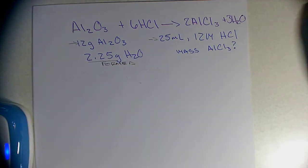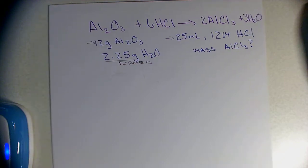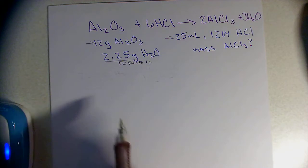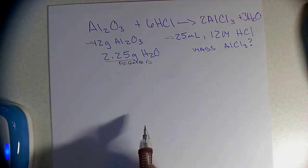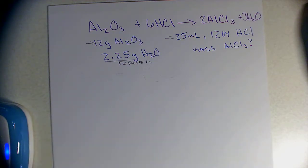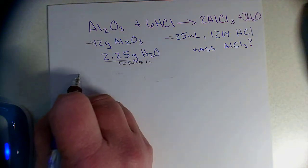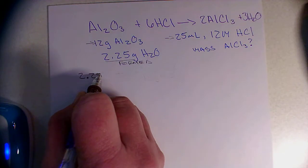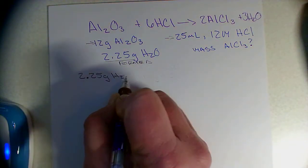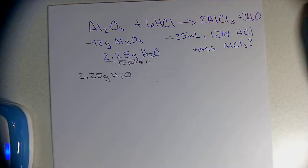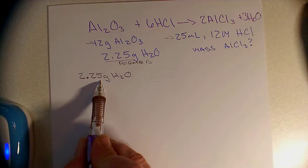The first question is: given the mass of the water produced, how many moles of AlCl₃ were produced? It's important to recognize — given the mass, how many moles. So I don't need to go into the mass of AlCl₃. I'm asked for moles of AlCl₃, so I'm going to start with what I was given: 2.25 grams of water. The most AlCl₃ I could produce is going to be a stoichiometry ratio of the water produced.